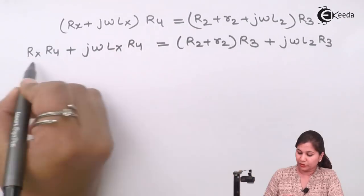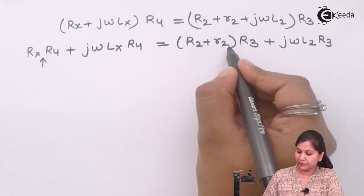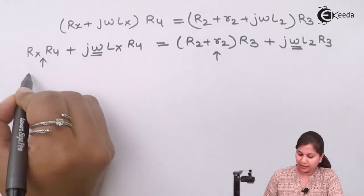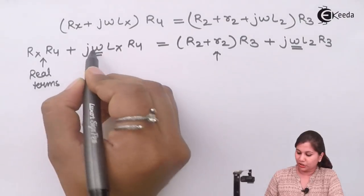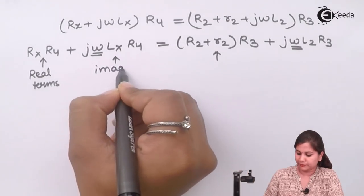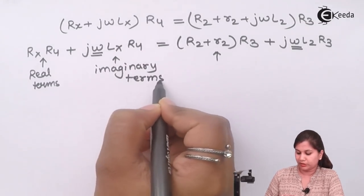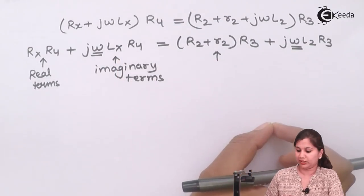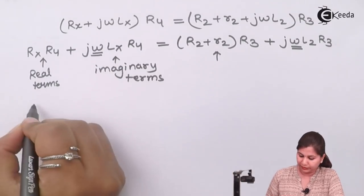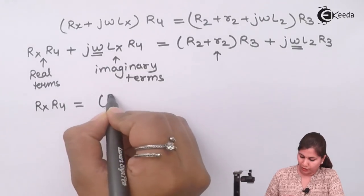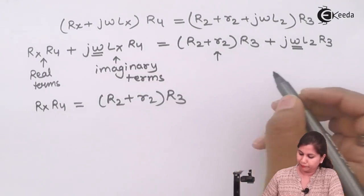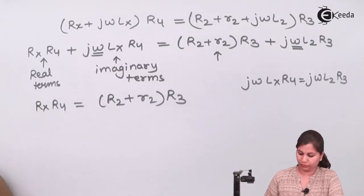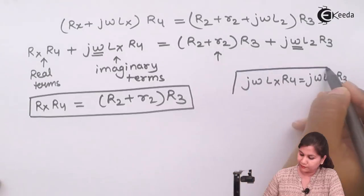Separating the real and imaginary parts gives us two equations. Comparing real terms: Rx·R4 = (R2 + r2)·R3. Comparing imaginary terms: jω·Lx·R4 = jω·L2·R3. These are the two separate equations which we have obtained from the balance condition.